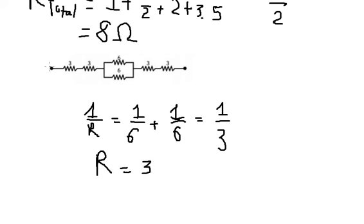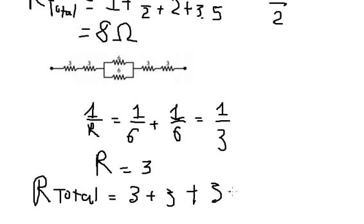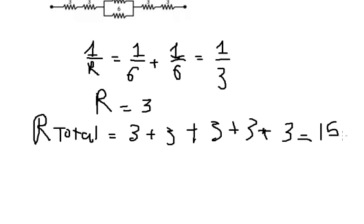Now we sum everything together because this is a series circuit, so we can find the total resistance. That should be 3 plus 3 plus 3 plus 3 plus 3. We sum five numbers and we get 15 ohms. This is the final answer.